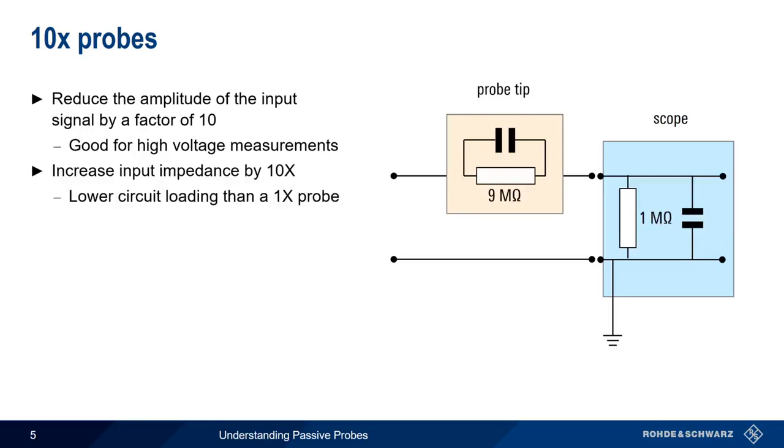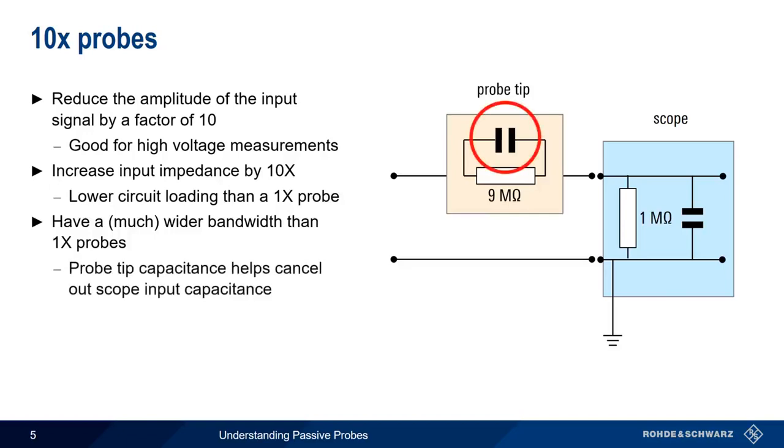One additional advantage of 10x probes is they have much wider bandwidth than 1x probes. The probe tip in a 10x probe contains capacitance that helps cancel out the scope's inherent input capacitance. This is particularly important when measuring signals with high-frequency components, like square waves and pulse signals.